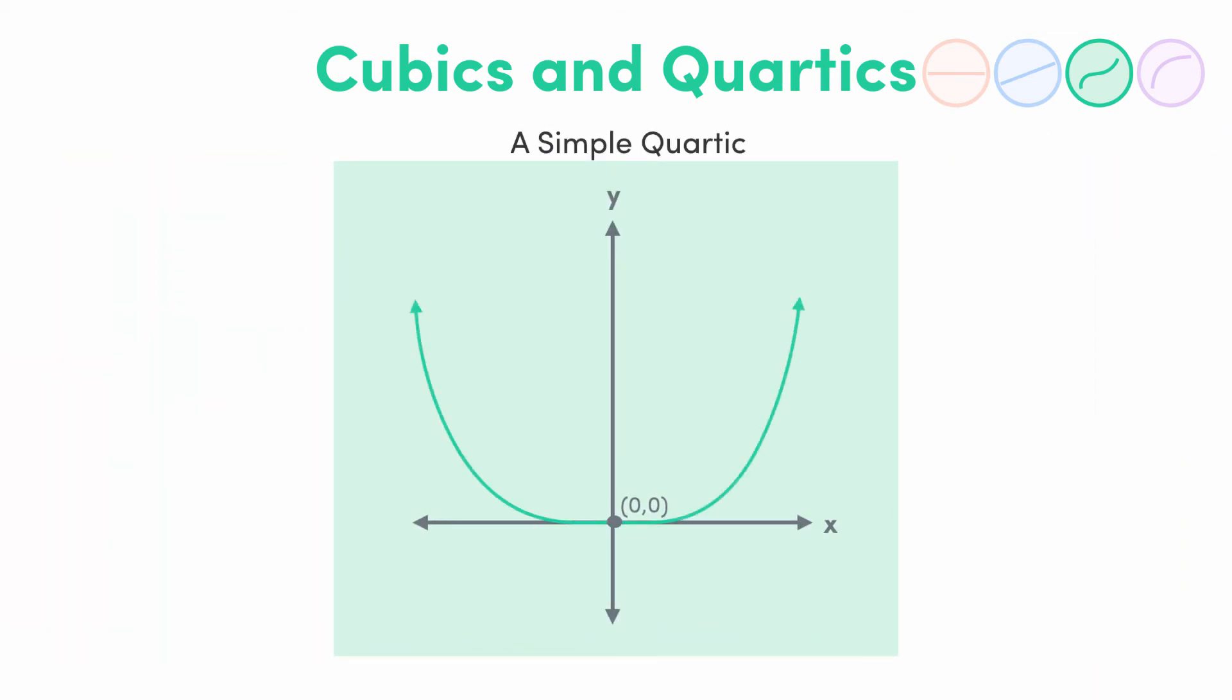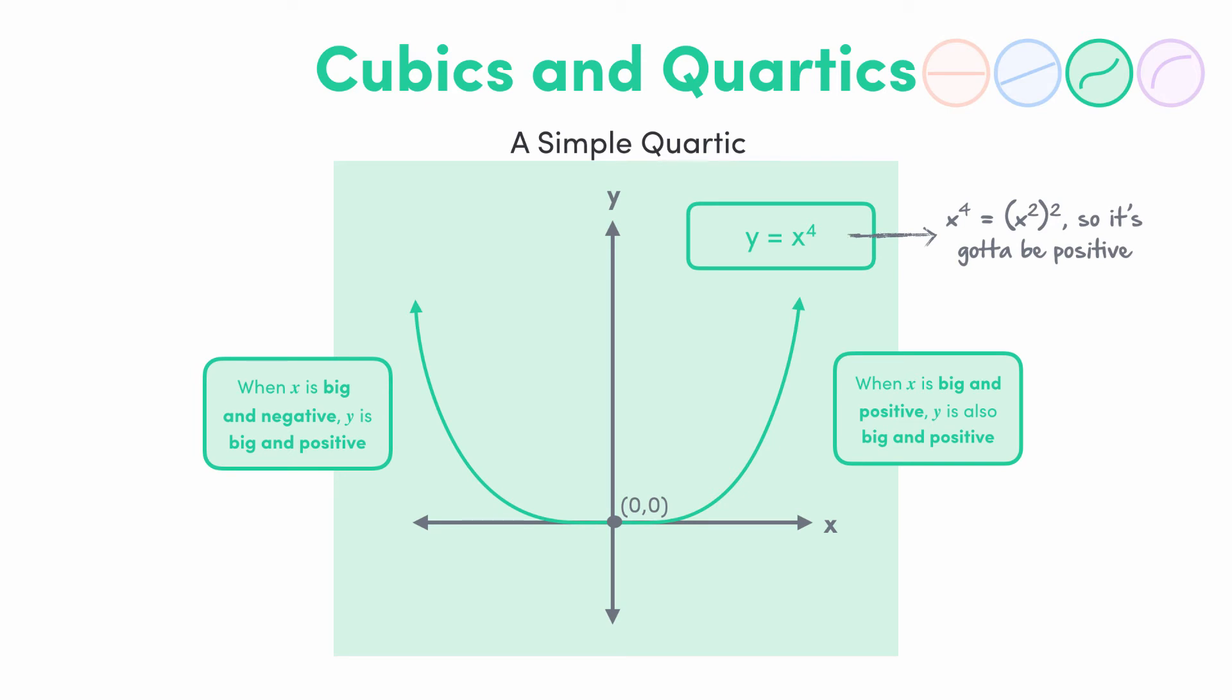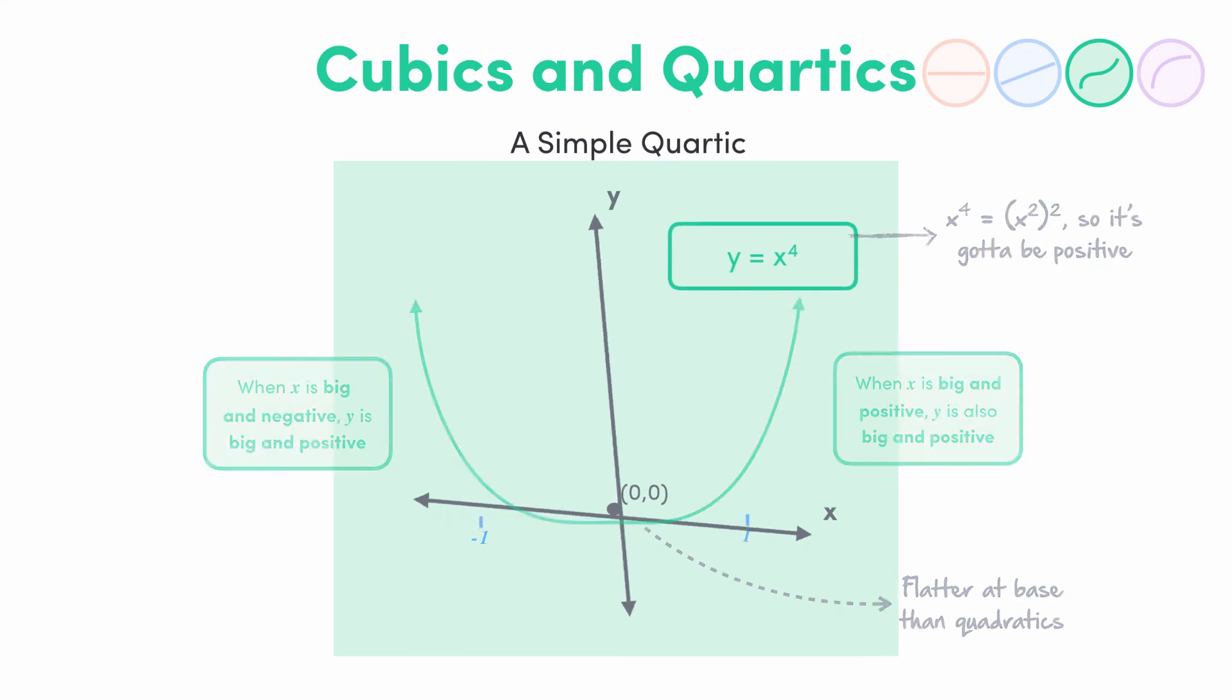Quartics on the other hand look more like this. Here we've got y equals x to the power of 4, and you can see that when x is big and negative, y is big and positive, and when x is big and positive, y is also big and positive. That's because x to the 4 is the square of x squared, so it's definitely going to be positive. They have a similar shape to quadratics, but the only real difference is they're flatter at the base, specifically between x equals 1 and negative 1. And obviously their intercept is 0, 0. And just like quadratics, the negative version is flipped like this.